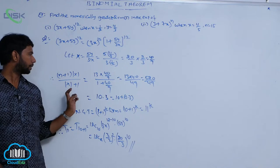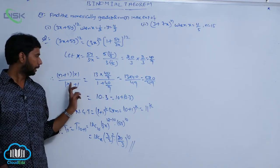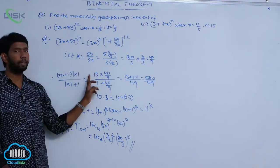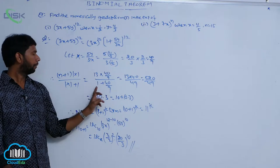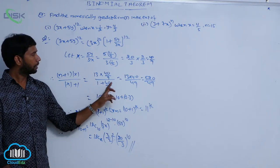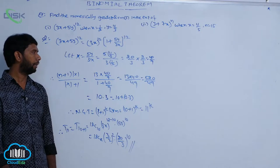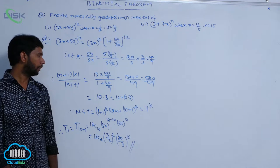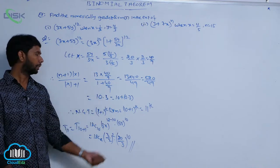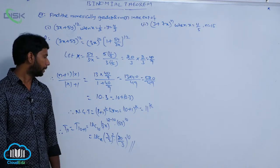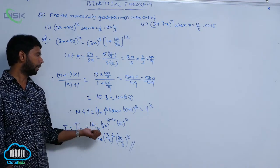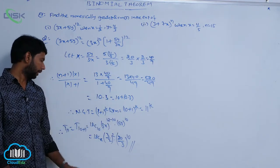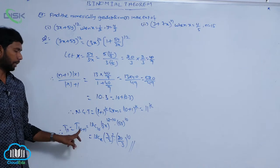Therefore, (n+1)|X| / (|X|+1), with n = 12, gives 13 × (40/9) / (1 + 40/9) = 13 × (40/9) / (49/9) = 520/49, approximately 10.3, written as 10 + 0.3. Therefore, the numerically greatest term is the (p+1)th = 11th term. T11 = T(10+1).